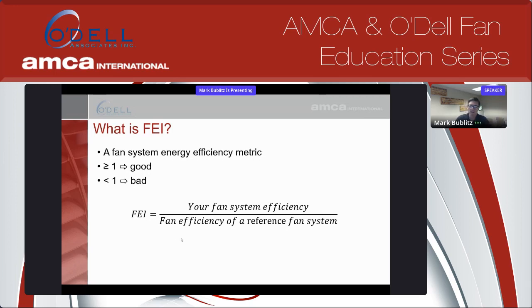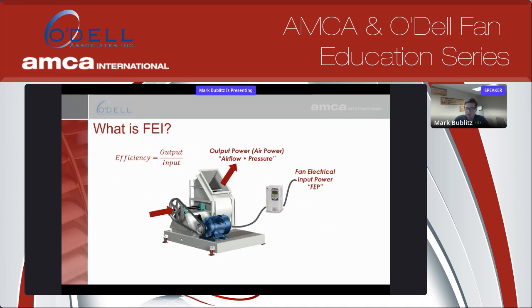Your goal is to be at least as efficient as the regulatory requirement, so the numerator efficiency — your fan system efficiency — needs to be greater than or equal to the fan efficiency of the reference fan system. Greater than or equal to one is good, less than one is bad. That's the basics of FEI. Efficiency generally is power out over power in. Air power in general is flow times pressure — that's what fans deliver. They move volumes of gas at a certain pressure.